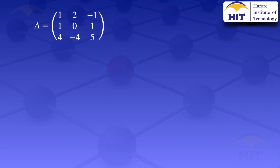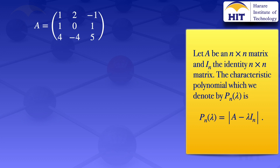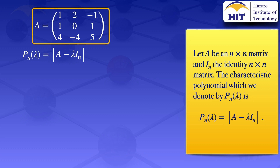The characteristic polynomial, which we denote by P_n of lambda, is the determinant of A minus lambda I_n. In this case, we are given a 3 by 3 matrix. Therefore, our identity matrix I_n will also be a 3 by 3 matrix, which is 1 on the diagonal. If we substitute this identity matrix into the formula, it will result in subtracting lambda from the elements on the diagonal of the matrix A.